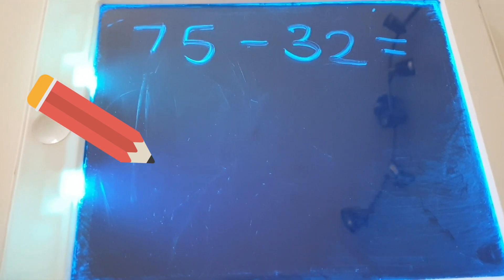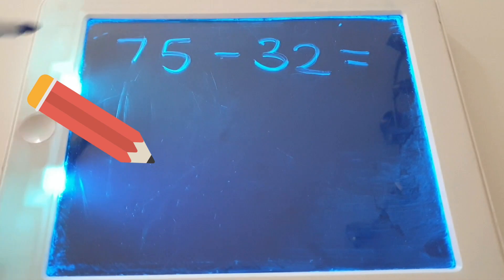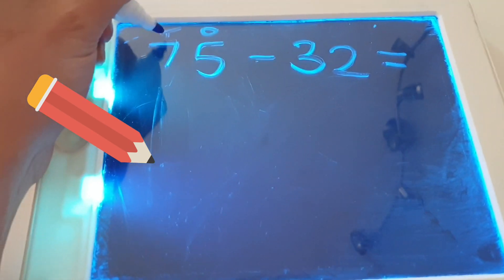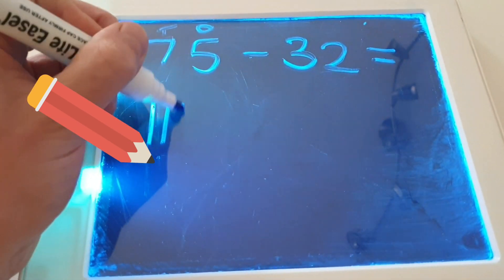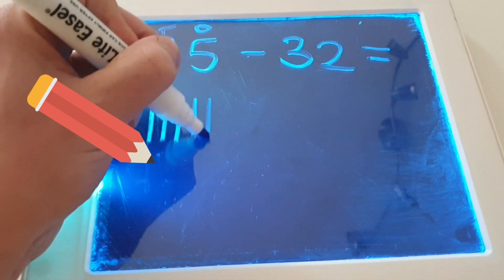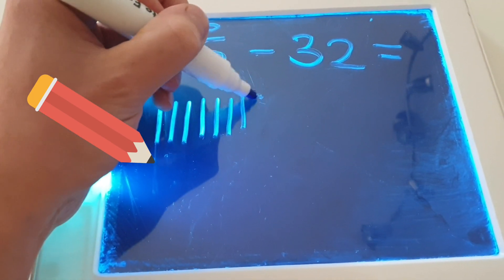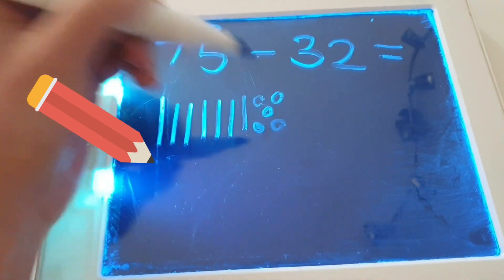I've had a go at solving that practically. If I'm feeling confident, I'm now going to have a go at solving it pictorially. So my first number is my 75, so I've got seven tens and five ones. Ten, twenty, thirty, forty, fifty, sixty, seventy. I'm going to draw my five ones. One, two, three, four, five.